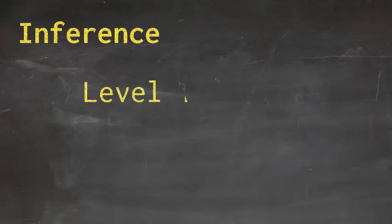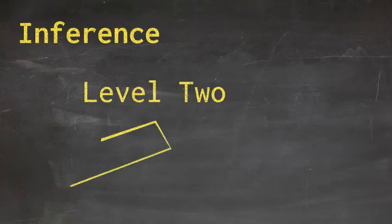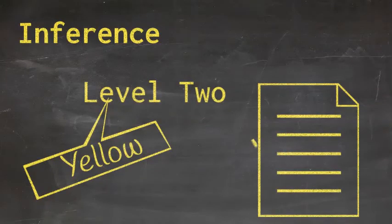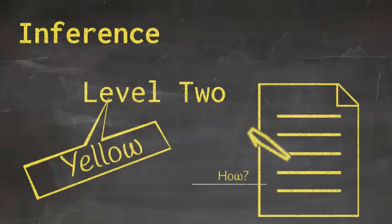Inference, level 2, is yellow. Inferences explain how or why a piece of evidence is important. Learning to make inferences may very well be the most important thinking skill you can develop in school or out of school. In your notes, highlight all your inference-level notes yellow. This will help you understand what the textbook or the instructor believes is important about the evidence.